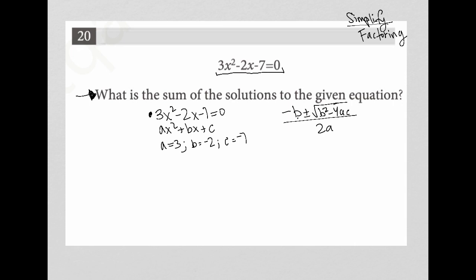So I'm just going to plug those values in. So instead of negative b, I'm going to have a positive 2 plus minus. Instead of b squared, I'm going to have negative 2 squared, which is 4. And then minus 4 times a, which is 3, times c, which is negative 7, all over 2 times a. And again, a is 3.